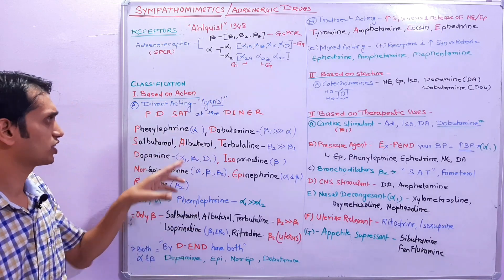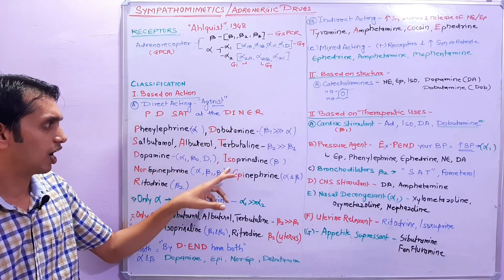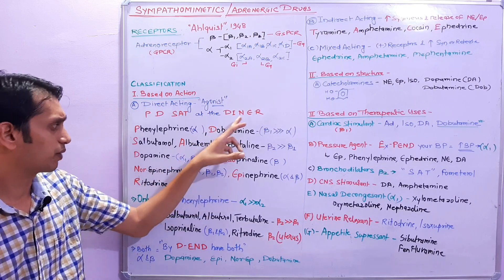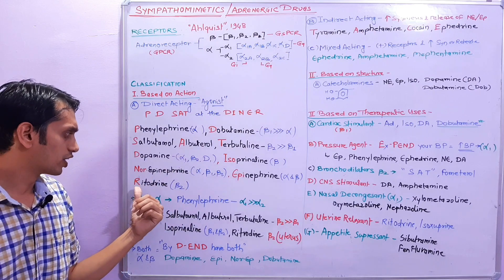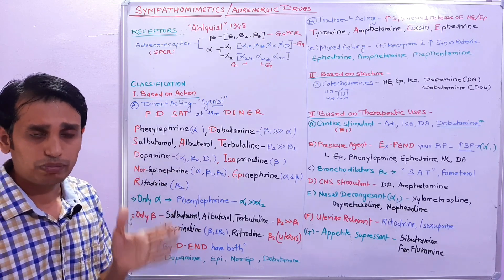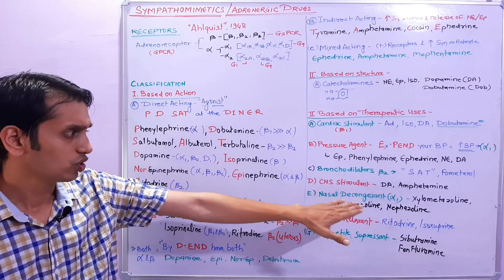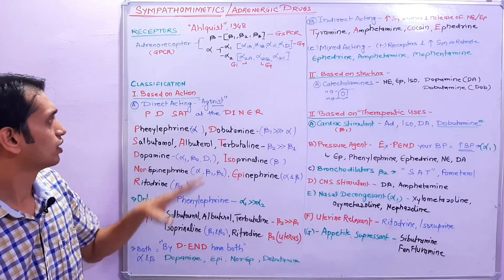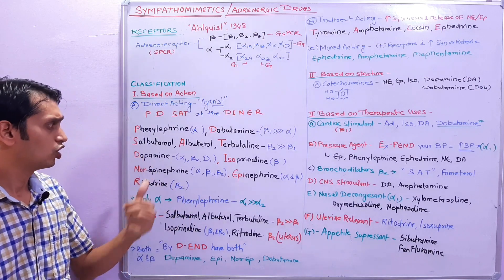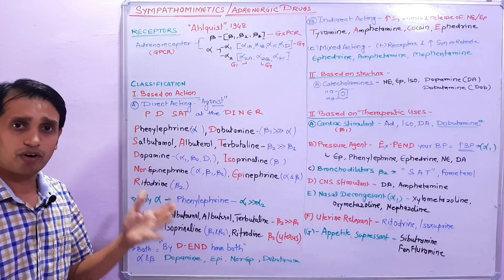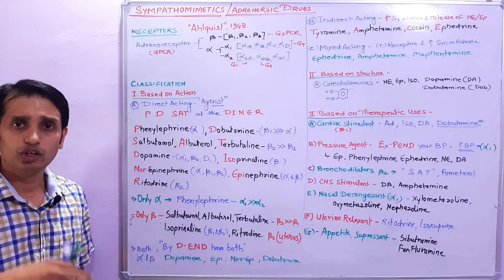Coming to the next mnemonic: 'DINNER.' D for dopamine, I for isoprenaline, N for norepinephrine, E for epinephrine, and R for ritodrine. These are direct-acting drugs. Dopamine is an alpha, beta-1, and beta-2 agonist. Isoprenaline is a beta-1 and beta-2 agonist. Norepinephrine acts on alpha, beta-1, and beta-3 receptors.